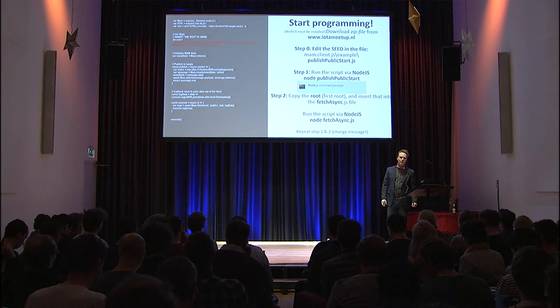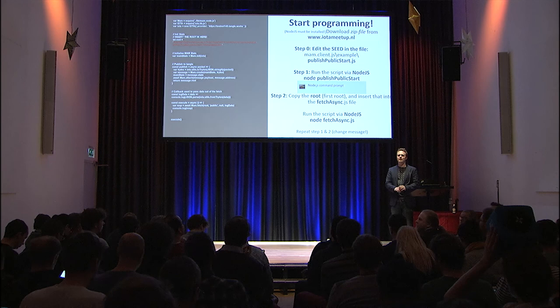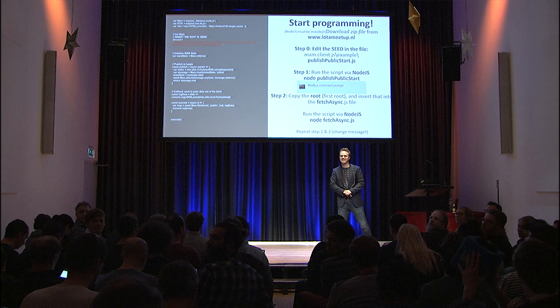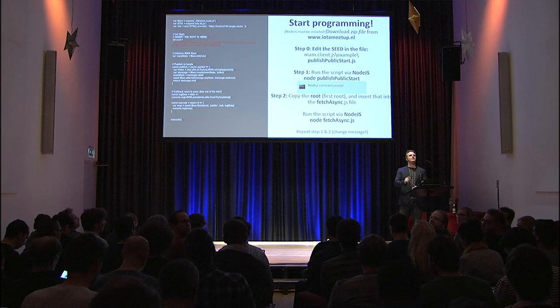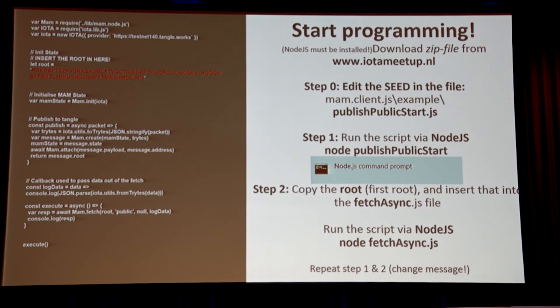Andreas, do you have any answer to that question? The question was: if you have a snapshot, all the MAM stream messages will be cleaned up — so where do you start with the new root? Pretty much where you were starting before, because each MAM message will always point to the next root, so you just follow that and you don't stop. At the same time, there's the whole concept of perma nodes being developed, which will provide a permanent view of all transactions even beyond snapshots, so you'll always be able to reconstruct the data in a MAM stream.